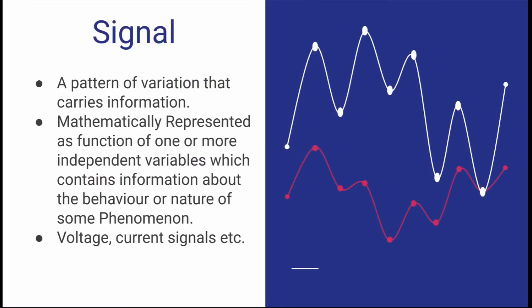So first of all, what is a signal? Basically, a signal is something which contains any information, a pattern or variation that carries information. Like I am taking a daily life example, you have traffic lights, traffic signal. In that you have yellow color, red color and green color light. So every light has significance.